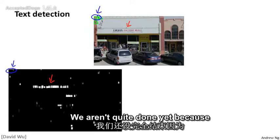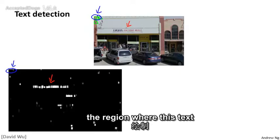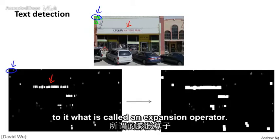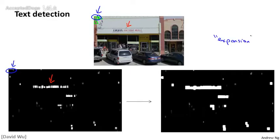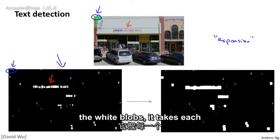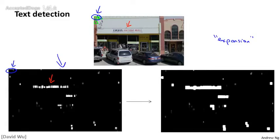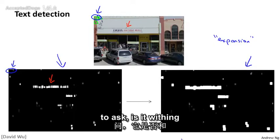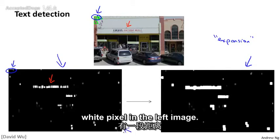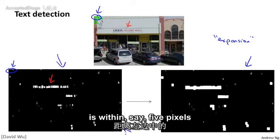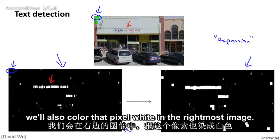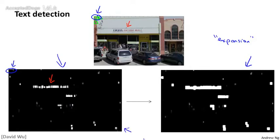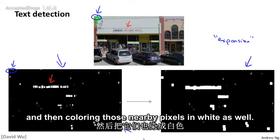For text detection, we want to draw rectangles around all text regions, so we take one more step: applying an expansion operator to the classifier output. This takes each white blob in the classifier output and expands it by coloring any pixel white if it is within some distance — say, 5 to 10 pixels — of a white pixel in the original image. The effect is to grow each white blob a little bit by including nearby pixels.